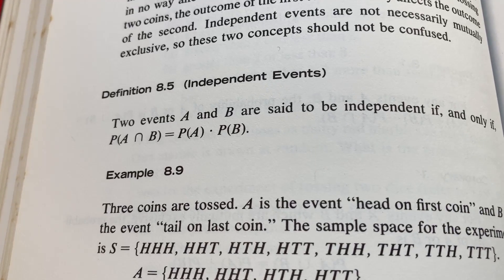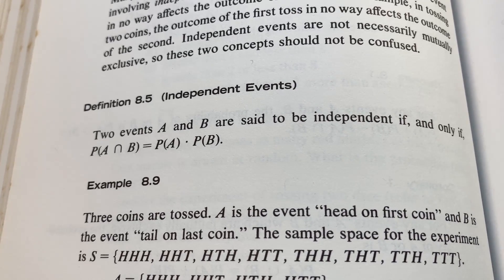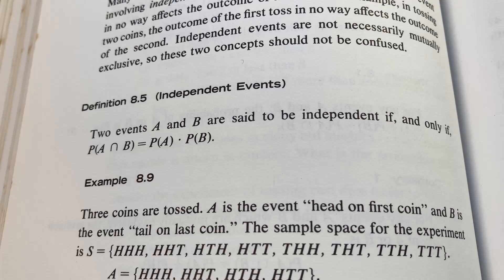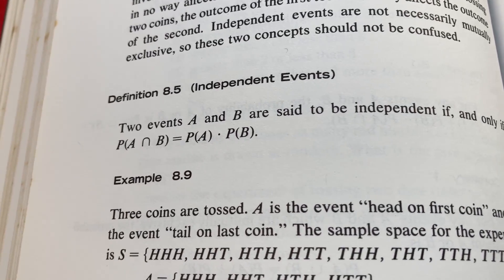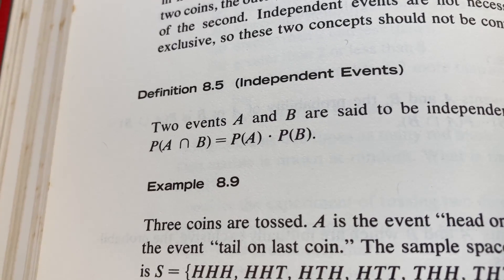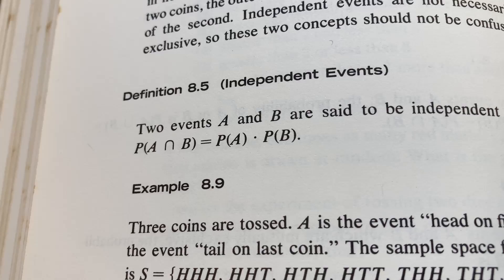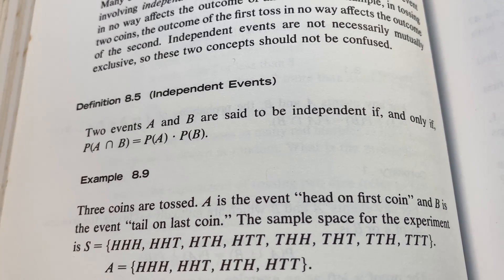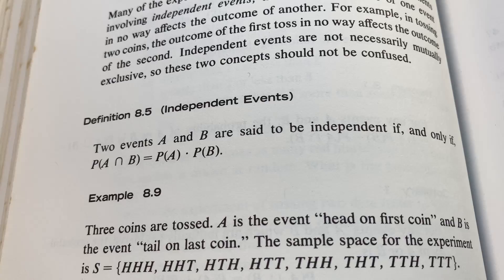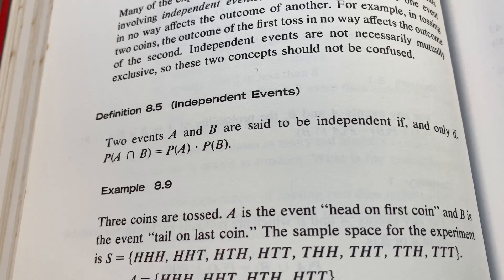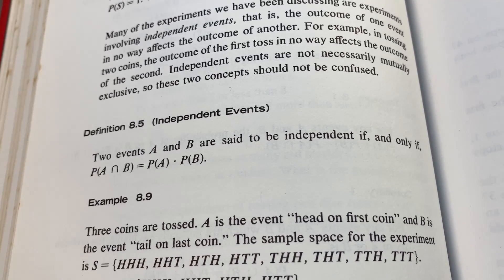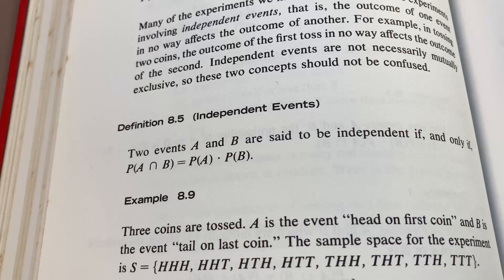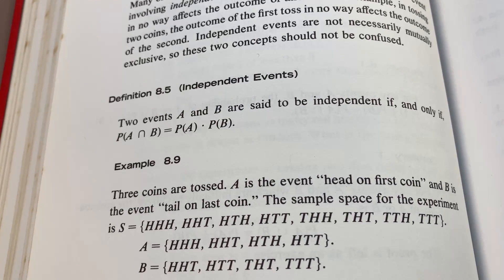This is from the section on probability. Here he defines what he means by independent events. Two events A and B are said to be independent if and only if the probability of A intersect B is equal to the probability of A times the probability of B. And again, he uses that if and only if terminology in the definition, which really isn't required. So if you ever see something like this, and it just says if, you have to assume that the if and only if is there. Really important to know that about mathematical definitions.